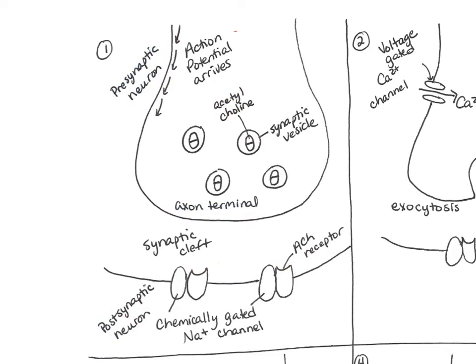Let's look at the events at a cholinergic synapse. In step one, an action potential arrives at the synaptic terminal. These action potentials traveling down the axon are collectively called a nerve impulse. The action potential depolarizes the synaptic terminal. In the synaptic terminal we see vesicles, each filled with the molecule acetylcholine. Each vesicle can hold up to 3,000 acetylcholine molecules.